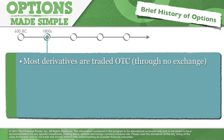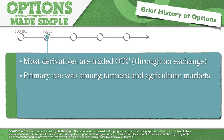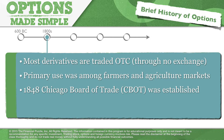Historically, derivatives have been traded over the counter — not through a central exchange. The primary use over the last couple hundred years was for farmers and agricultural markets. That's why the futures market is so well developed in the United States — farmers in the ag markets needed a way to offset their risk. In 1848, the Chicago Board of Trade was established, centralizing activity where much of the agricultural trade was taking place.